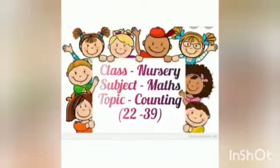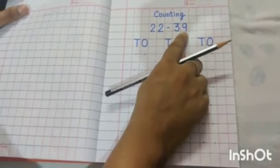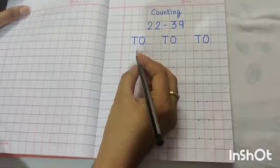Good morning dear kids. Our today's topic is counting 22 to 39. Let's start.